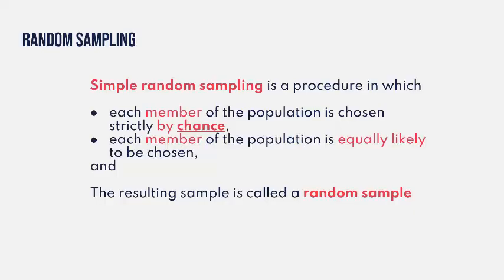Simple random sampling is a procedure in which each member of the population is chosen strictly by chance. If you end up becoming part of this sample, you got picked solely by chance — there was no other reason, it was just by luck. Each member of the population is equally likely to be chosen. For example, if we wanted to call people in the United States to estimate average income, the probability that you would get called is exactly the same as the probability I would get called. If each person is chosen by chance and everybody has the same odds of being chosen, the resulting sample is called a random sample.